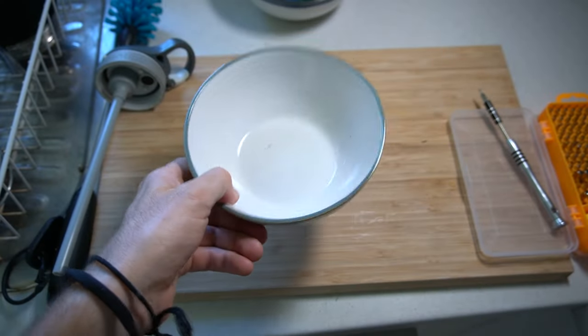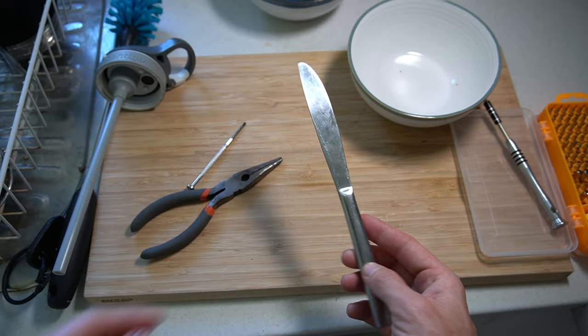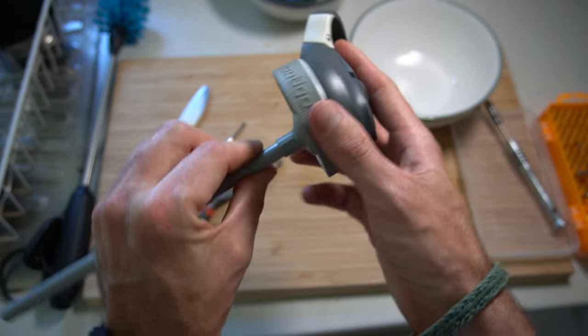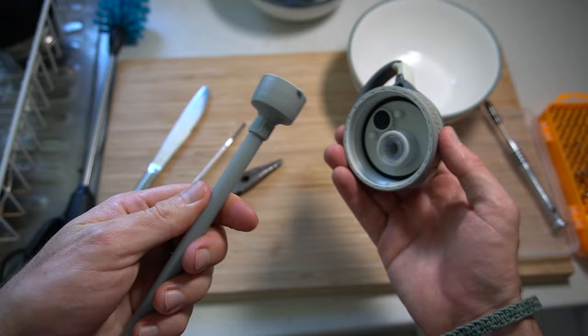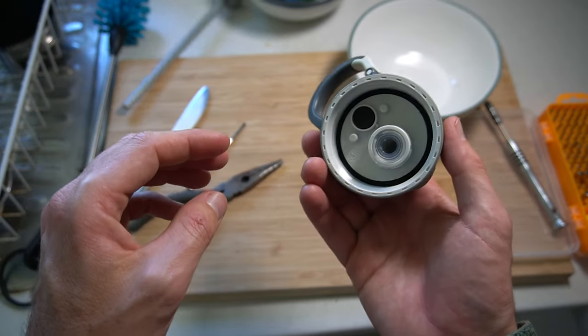You're also going to want a bowl to put all your items in and you might want a butter knife as well. To pull apart this lid, start by taking the straw off. So you just unscrew it and that comes off just fine.